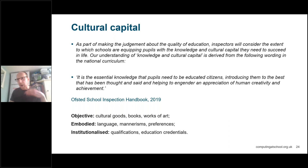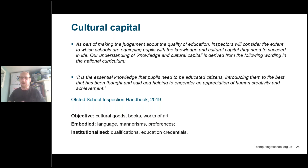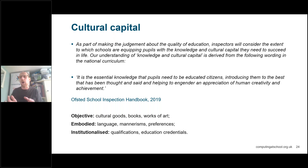Cultural capital comes from three strands: objective, embodied and institutionalized. We might look at works of art, previous ways of codebreaking, ciphers, pig pen ciphers, going back to medieval times. We can look at different qualifications that are there. We can bring great role models in, like Grace from IBM, who can explain what it's like. We can build that capital that some students at home may not have access to — that understanding of what it can be like and the different paths we can take. We can gain new experiences, help children make informed decisions by sharing all of that knowledge and opportunity with them.